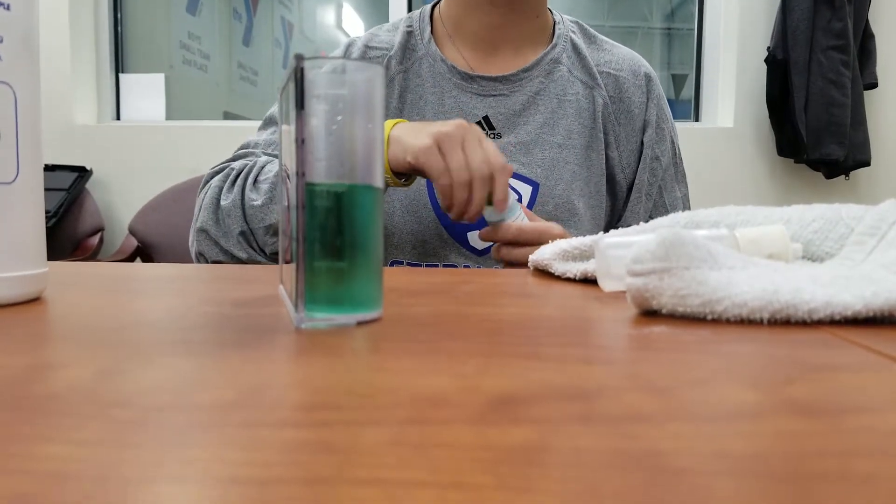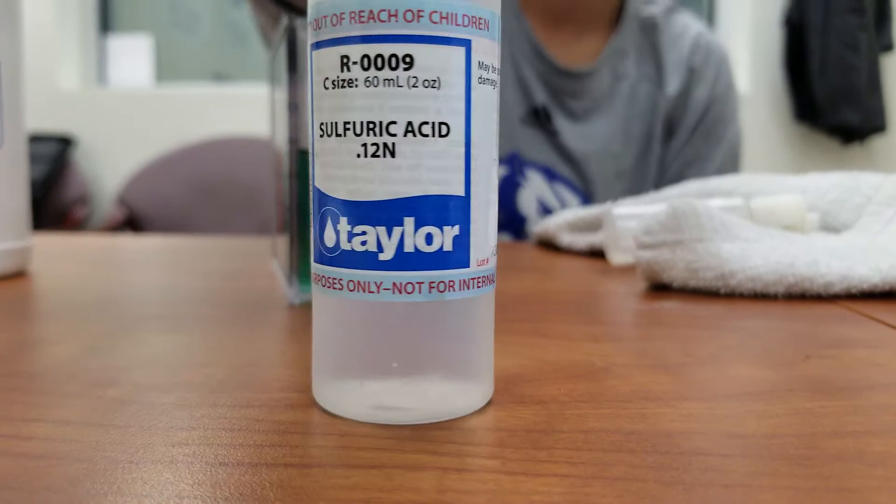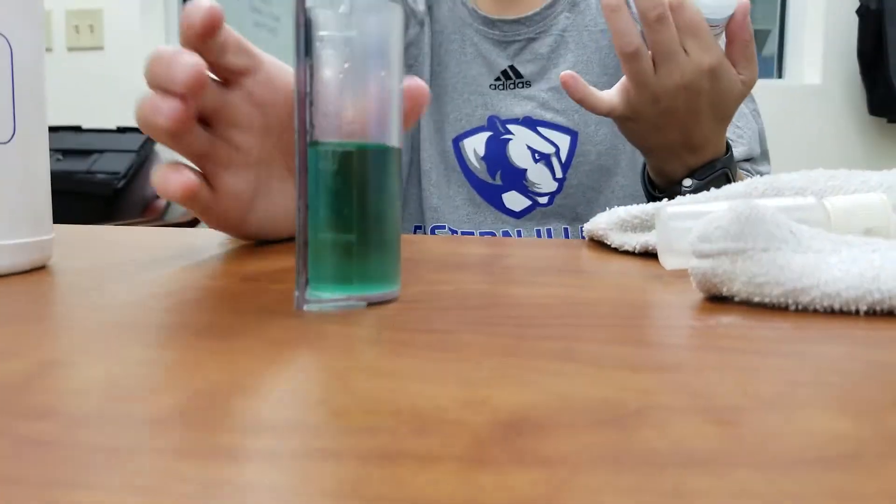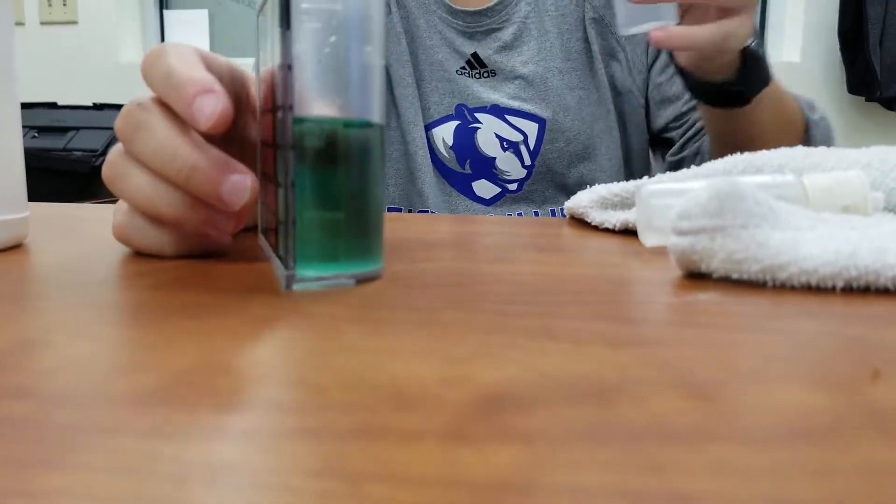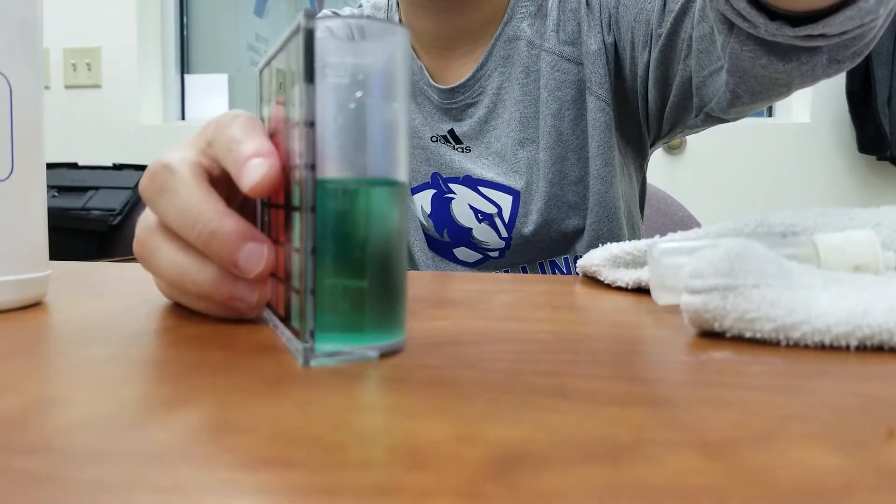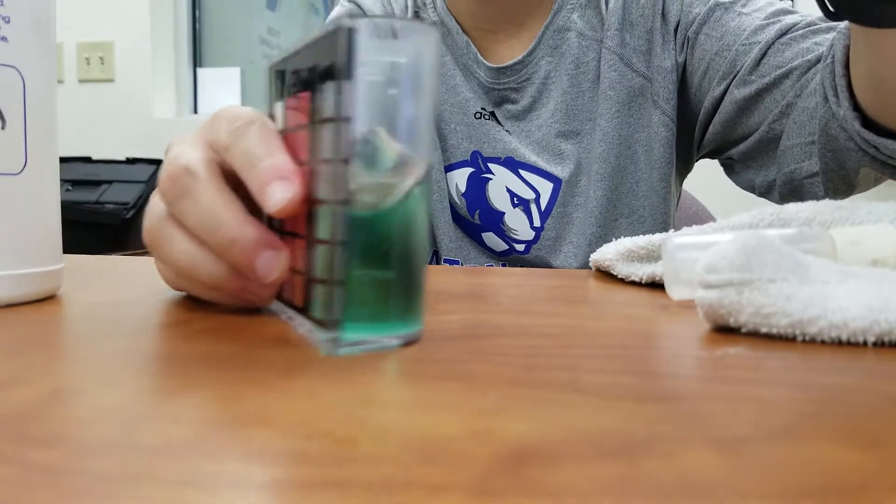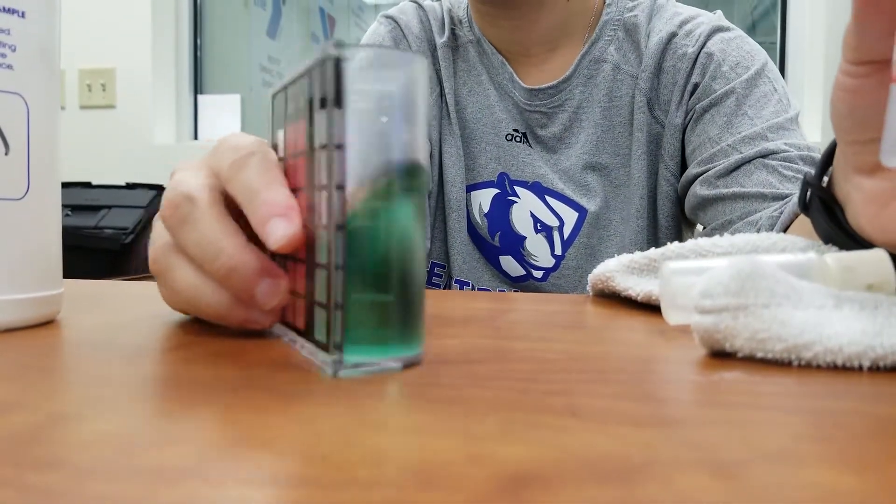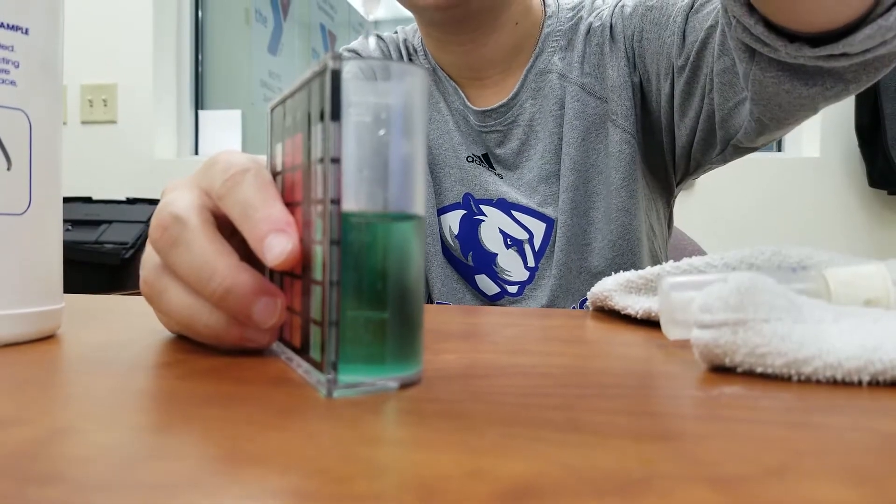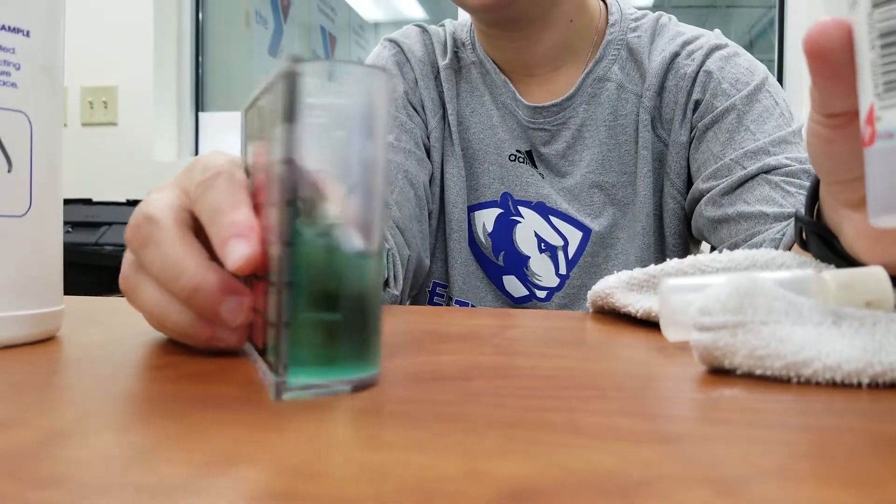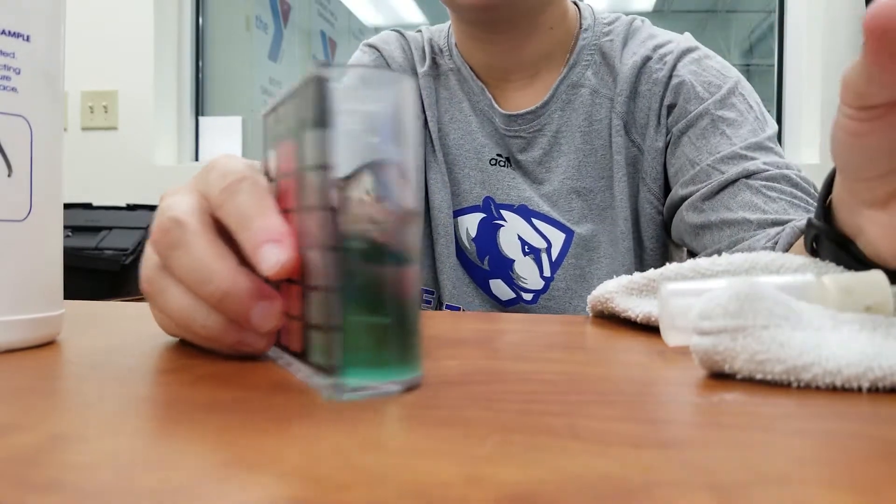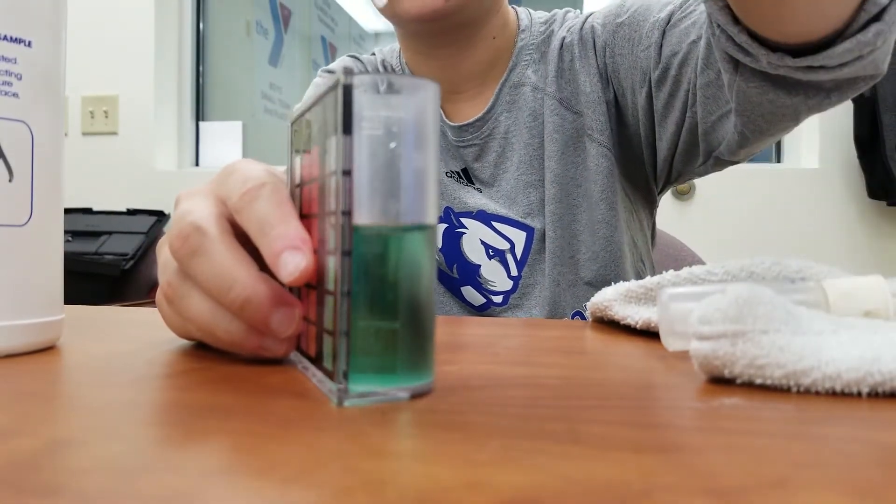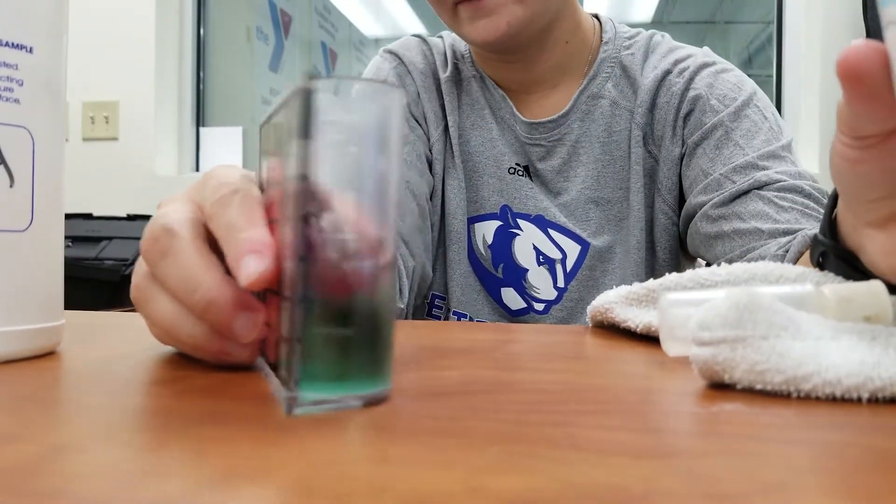So now we're going to take R009, and we're going to add that drop-wise. This is sulfuric acid, so you want to be careful not to get that on you. Typically, we're anticipating an alkalinity of around 100. We're going to count however many drops we end up getting and multiply that by 10. So if we add five drops, that's 50. If we add 10 drops, that's 100, etc.